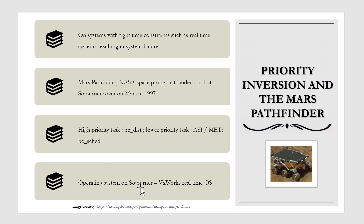The operating system on the Sojourner was the VxWorks real-time operating system, which had a global variable to enable priority inheritance on all semaphores. After testing, the variable was set on the Sojourner on Mars and the problem was solved.